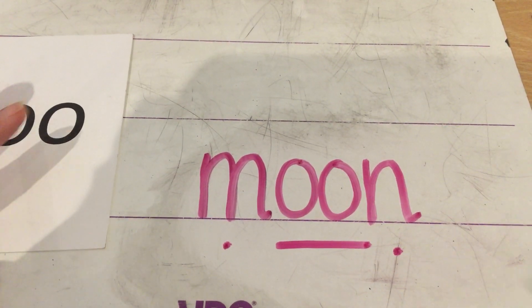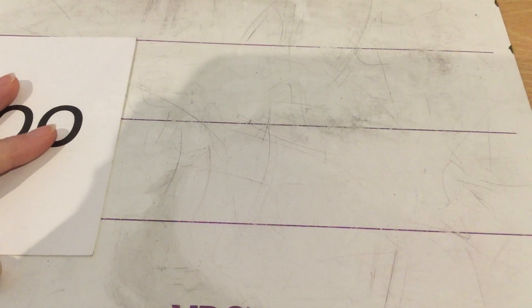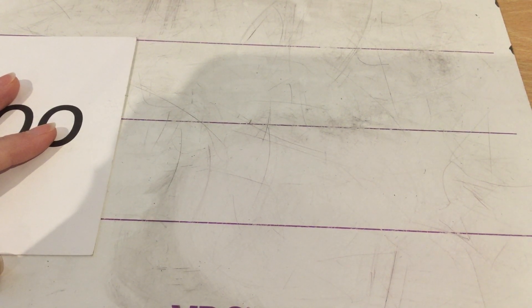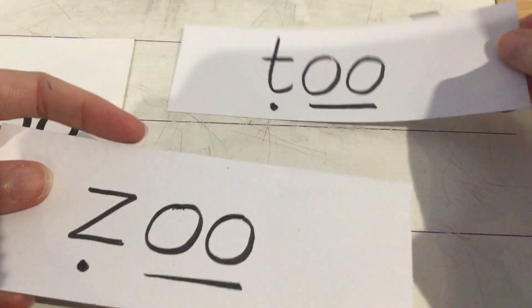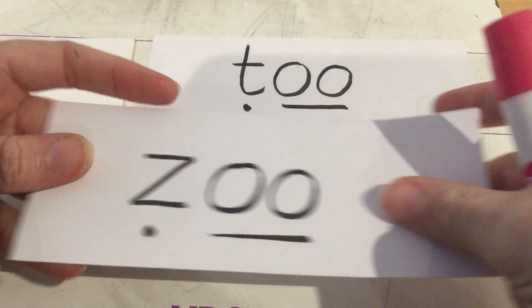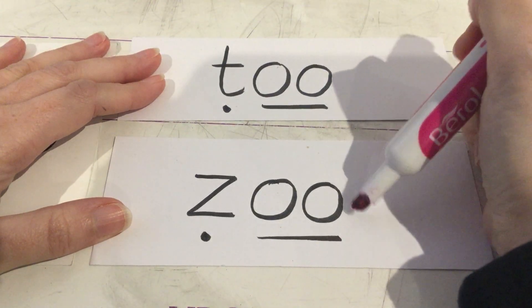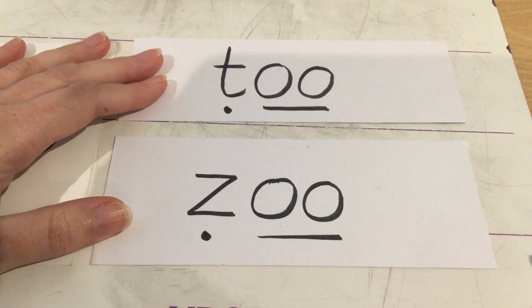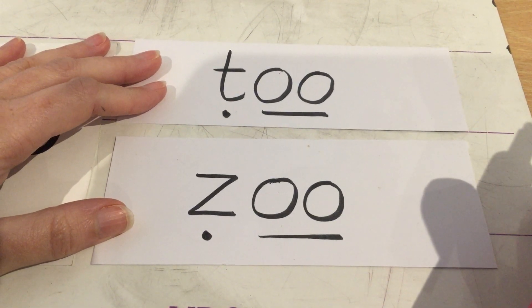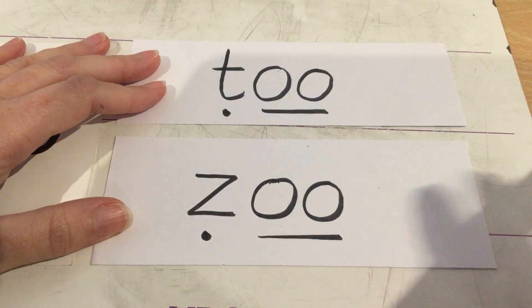Well done guys. So a little challenge for you today. Once you've finished. Using the words that we started with. Two of the words that we started with. So using this one. Moon. And pool. See if you can add a letter on the end to make a new word. Bye-bye.